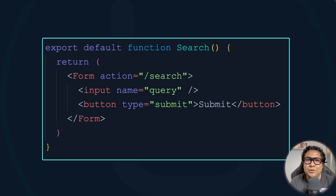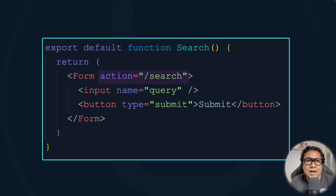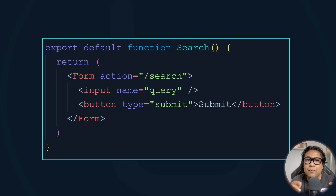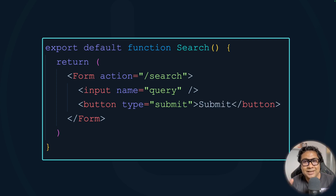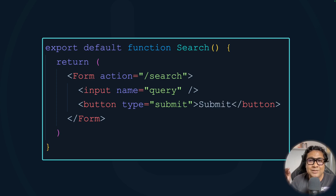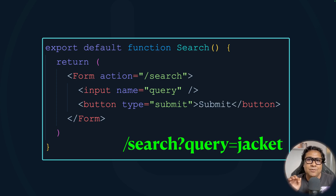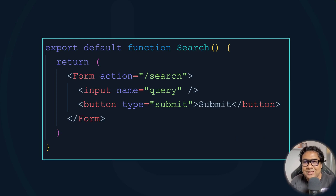When the form's action prop takes a string value — for example, '/search' — when the form gets submitted it behaves like HTML's native form with the GET method. If you type something into your input field with name 'query', once the form is submitted there will be a search query parameter with the value you submitted, encoded, and the URL will change to '/search' with your input added as a search parameter.